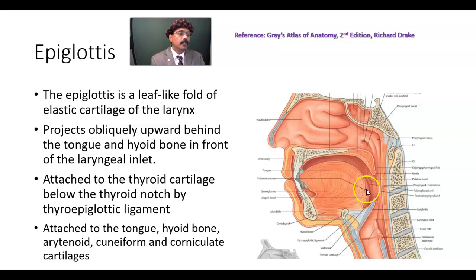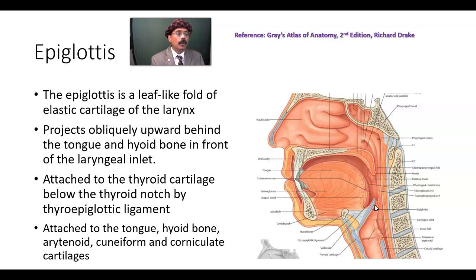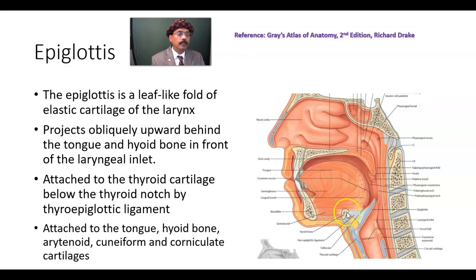This is the epiglottis. This is a hemisection of the head and neck. The epiglottis is a leaf-like or heart-shaped fold of elastic cartilage of the larynx. It projects obliquely upwards behind the tongue.